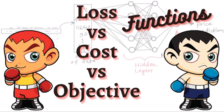Hey everyone, how are you doing? Welcome back to another exciting video. In machine learning, people talk about objective functions, loss functions, and cost functions. People use these terms all the time — are they actually different, or just different names for the same thing?